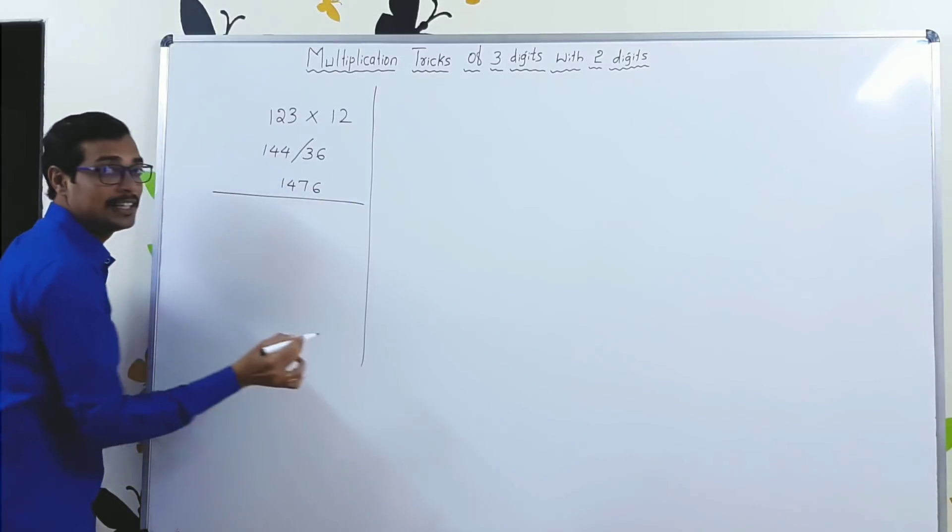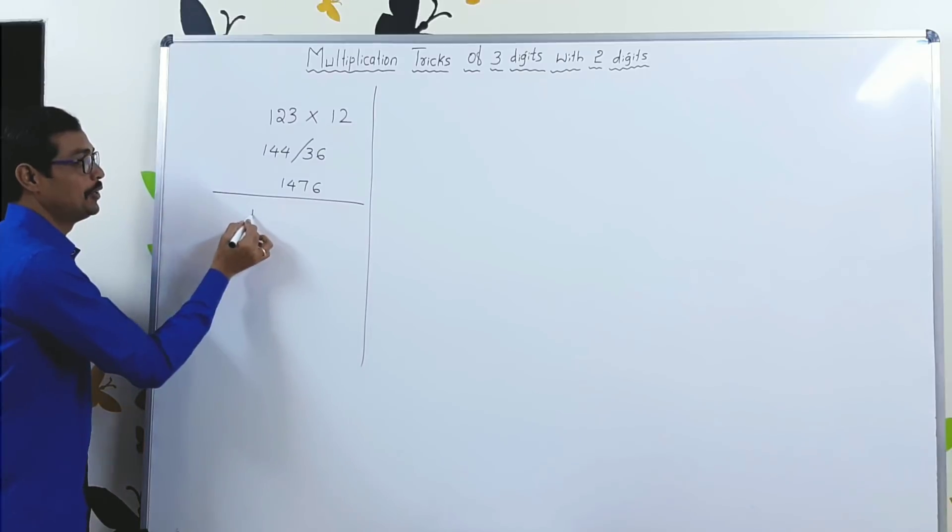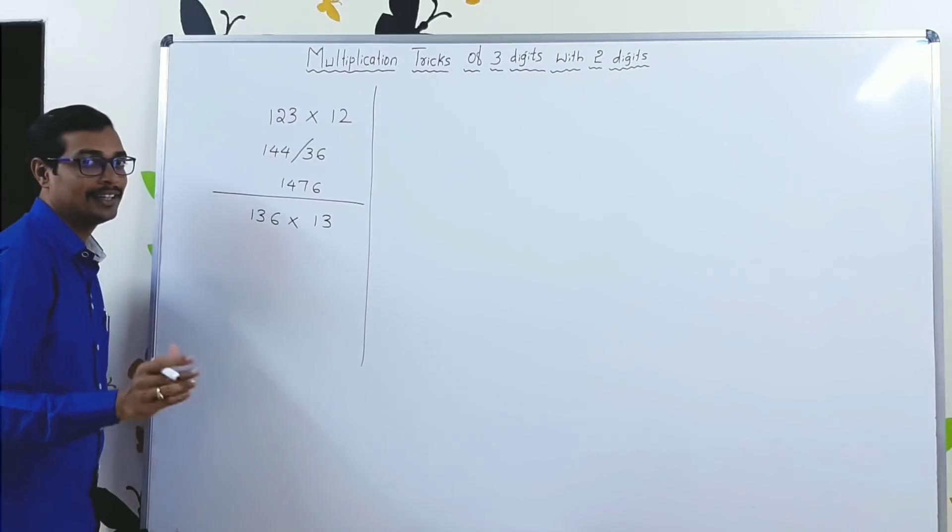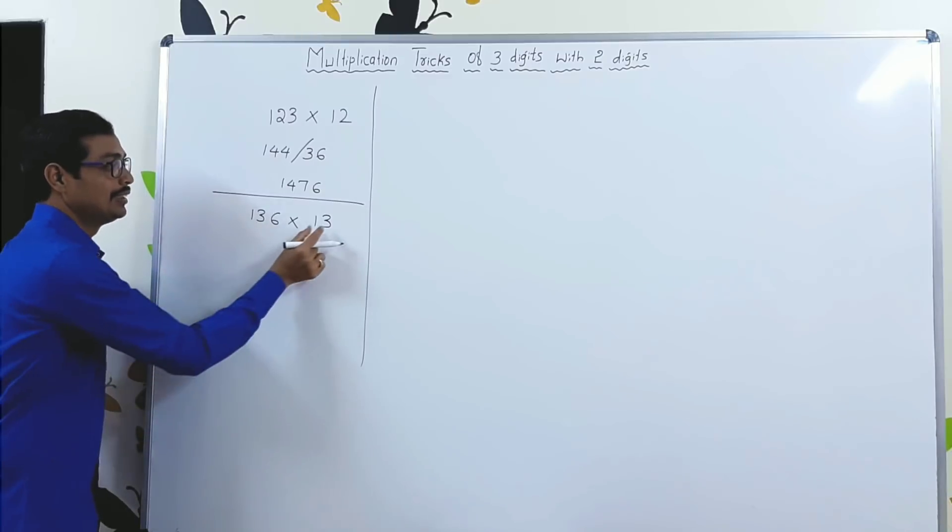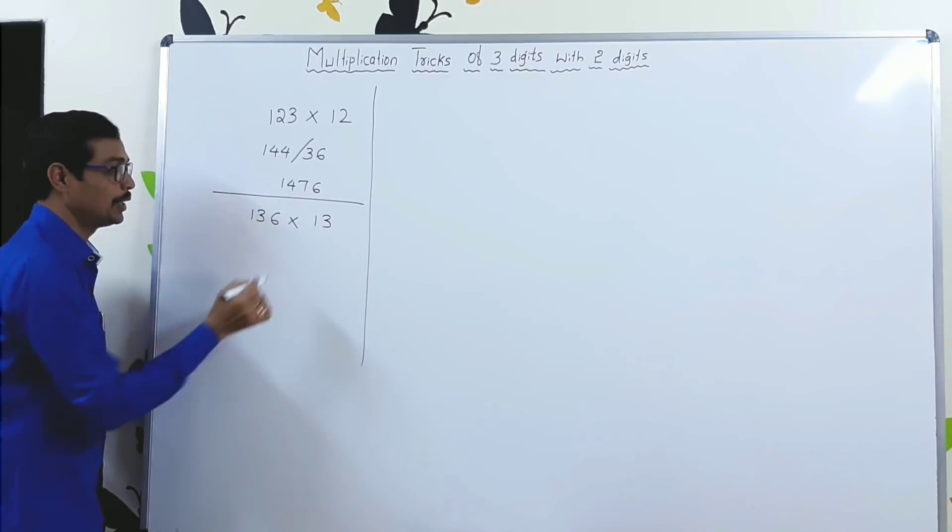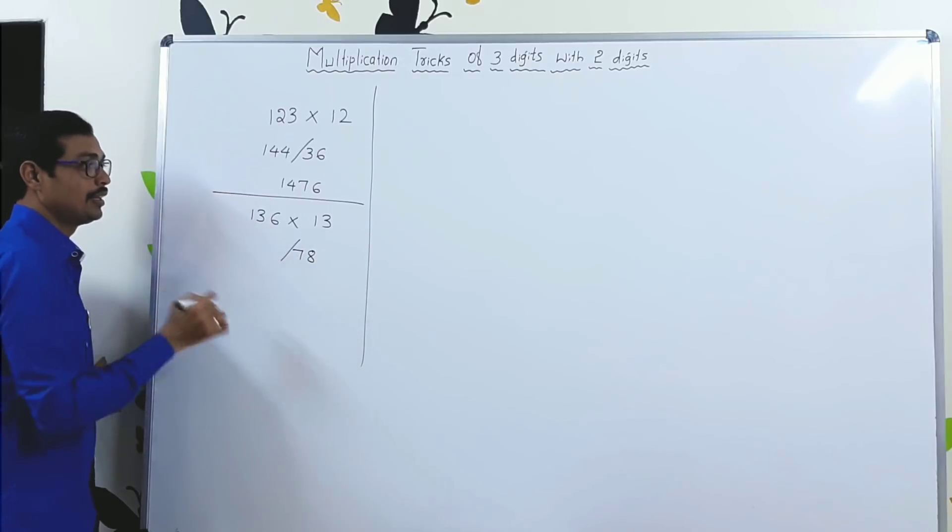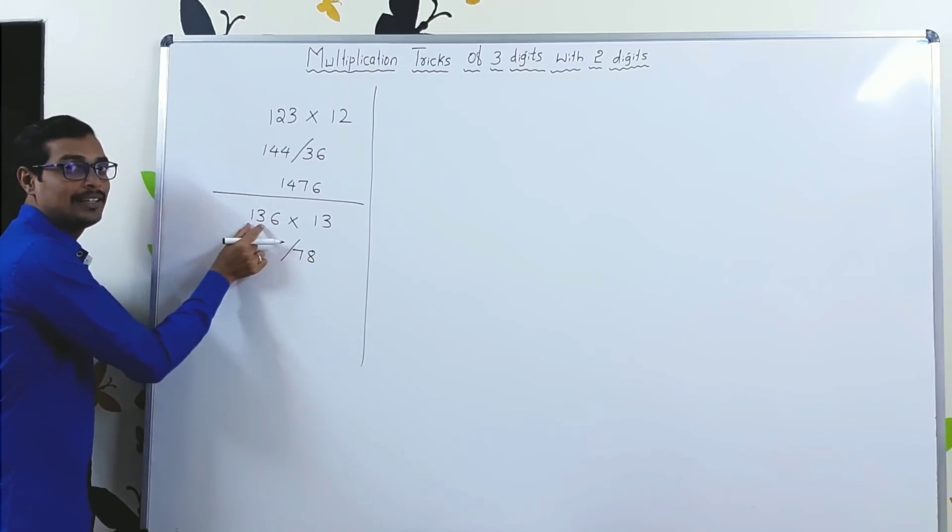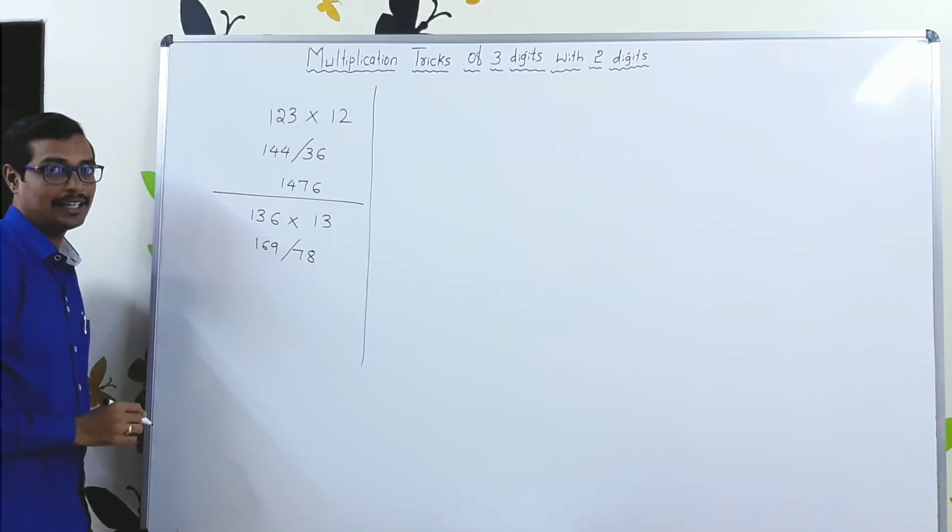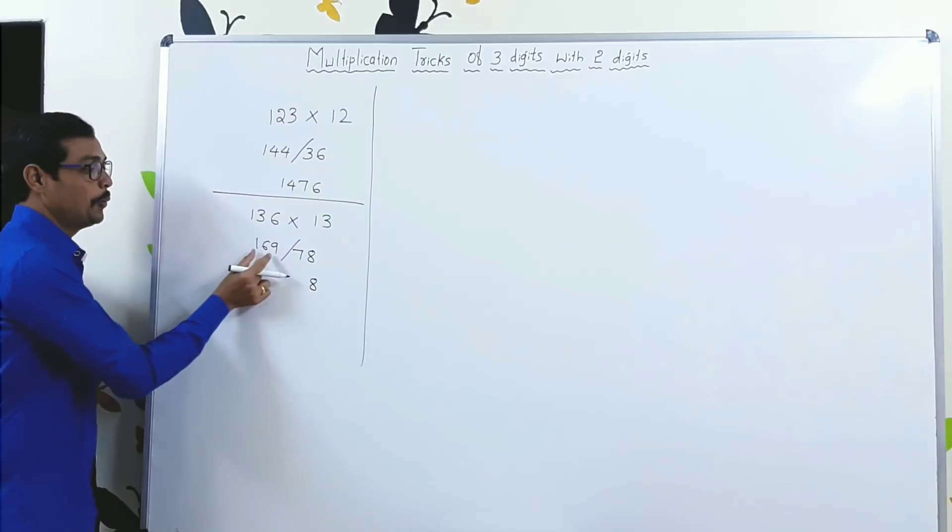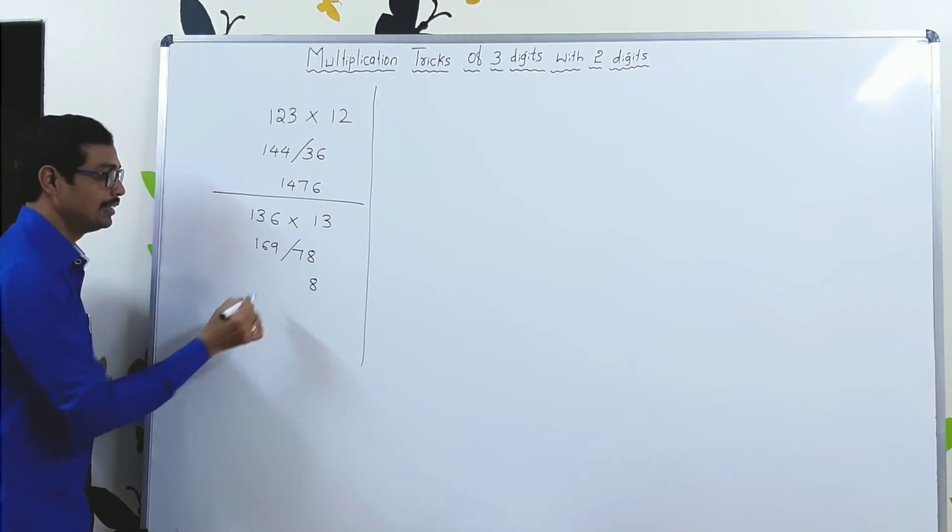Let's consider one more example. 136 into 13. Nothing to worry. I will teach you. 13 × 6 is 78. 13 into 13, 169. Write the unit digit as it is. 169 plus 7, definitely 176.